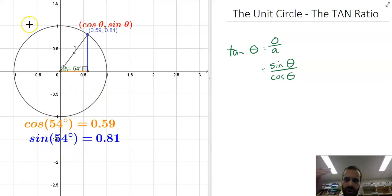That means that you can type tan 54 into your calculator, or you can type sin 54 divided by cos 54 into your calculator, and you would get the same answer. You would get 1.38, which is 0.81 divided by 0.59. Put it in your calculator, you'll believe me.